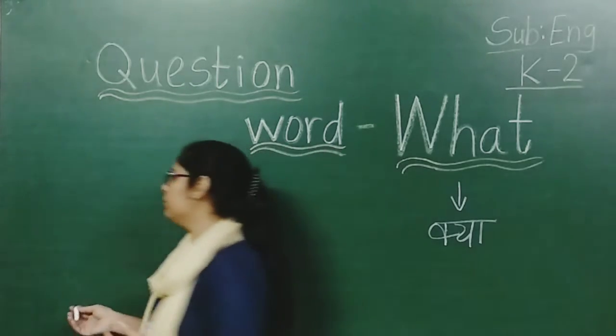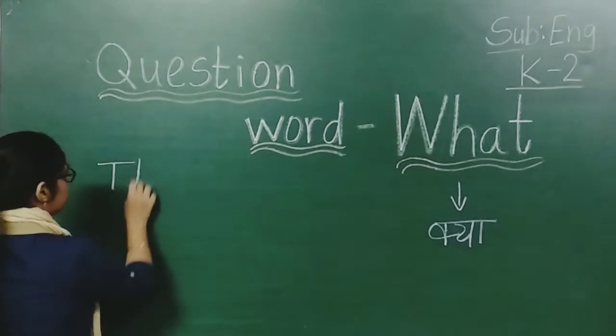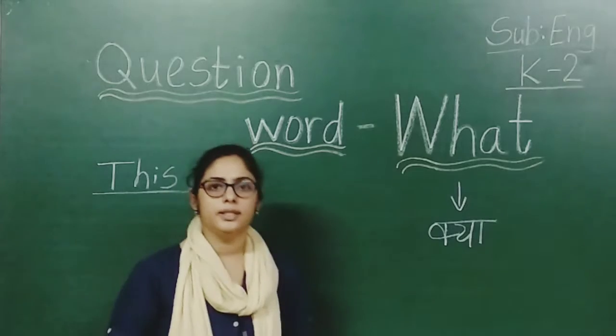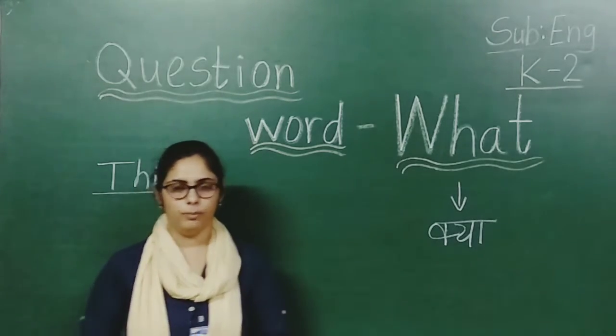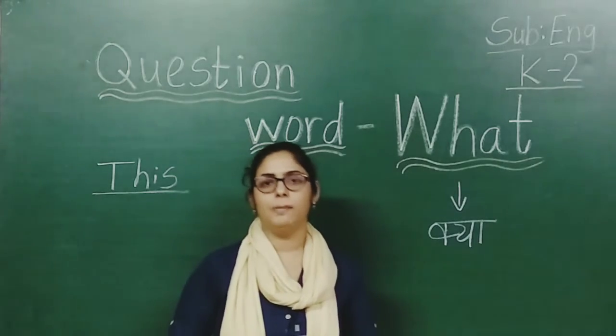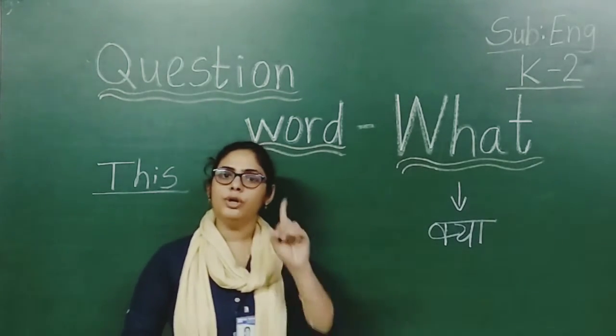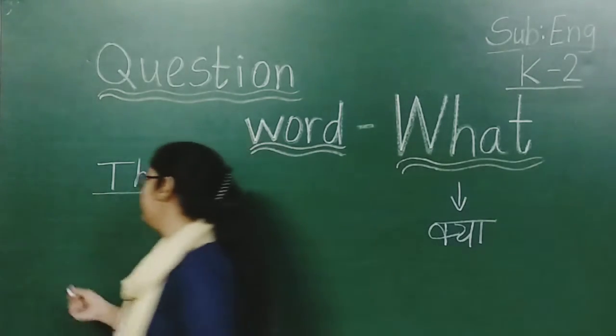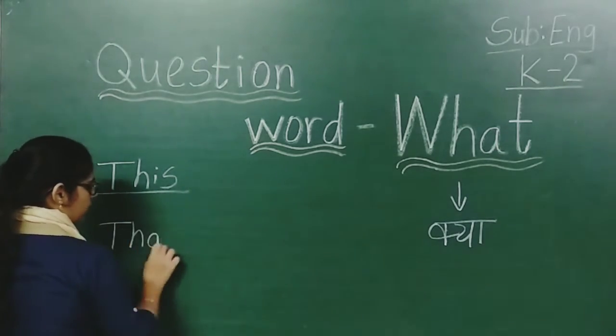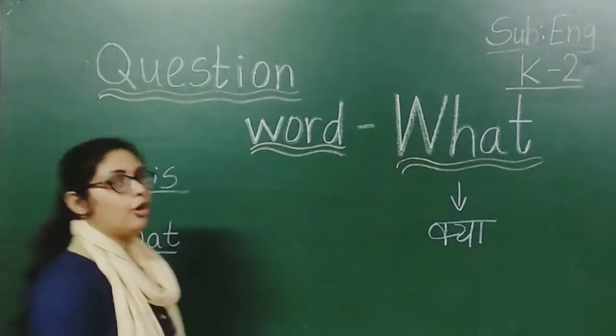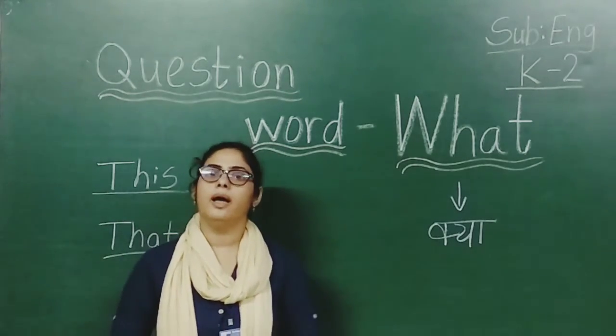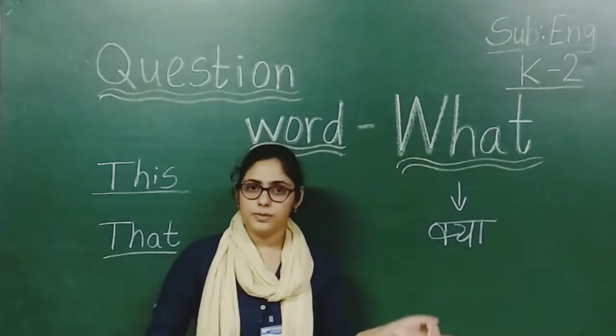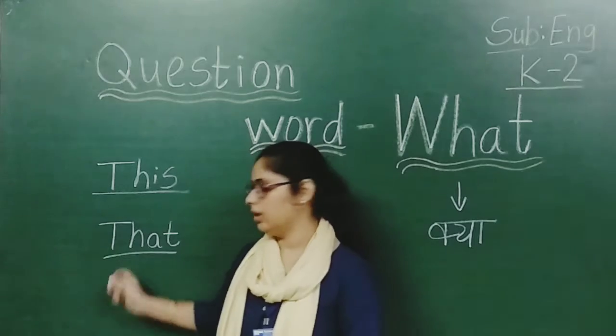First of all we will do this. For what we are using this? When the subject aur object is near to us and it is in singular form. This and that kis hi re use kaartte hain? When the subject aur object is far away from us and it is in singular form. Jab subject aur object hamse door hoota hai, tab ham use kaartte hain that.